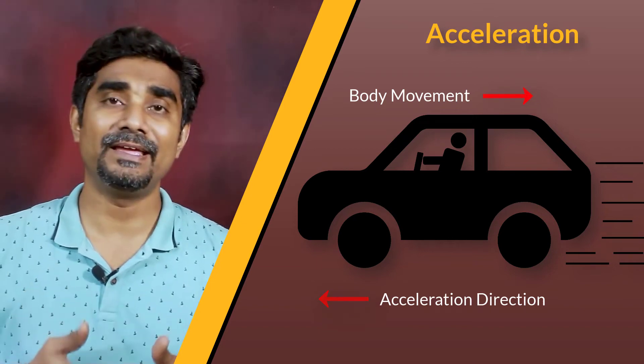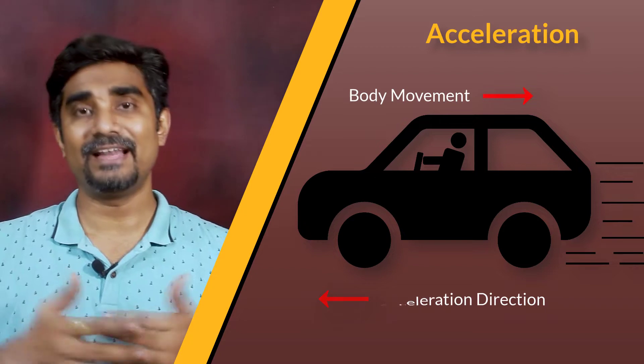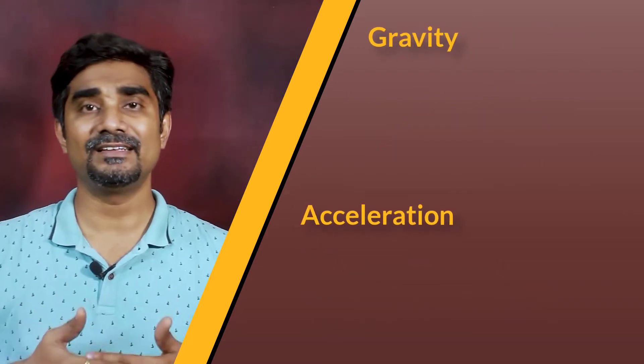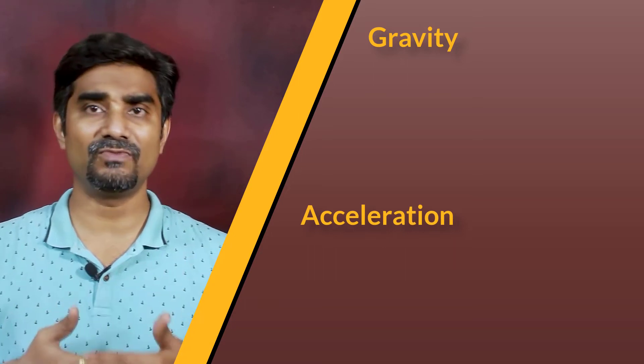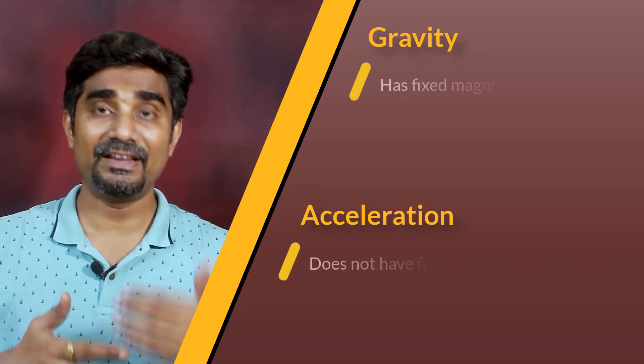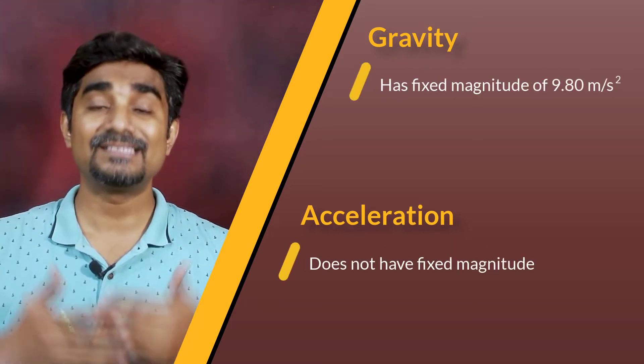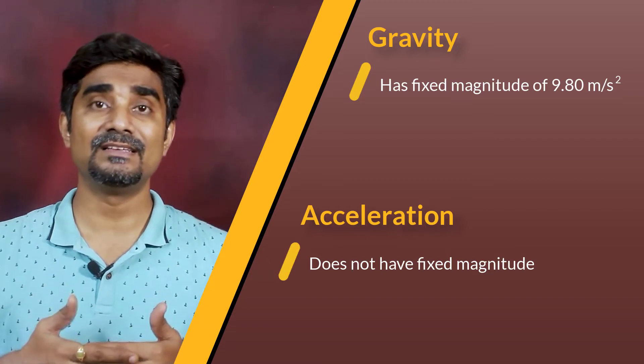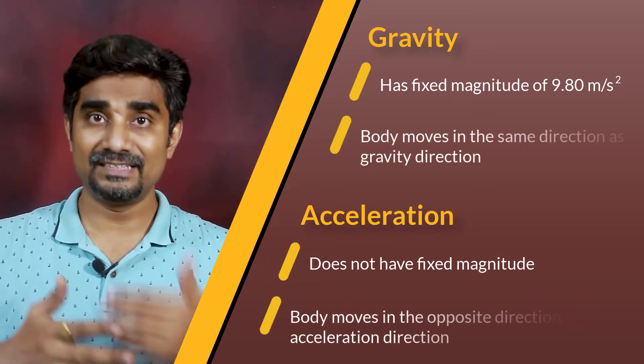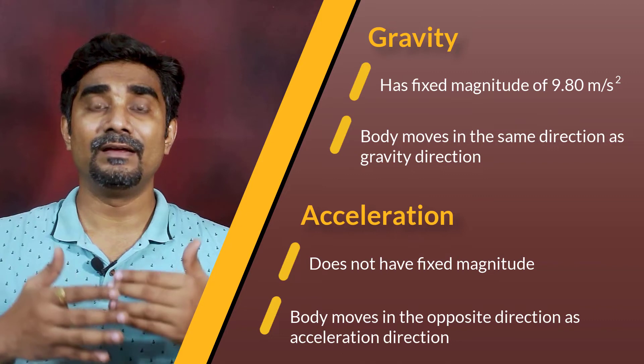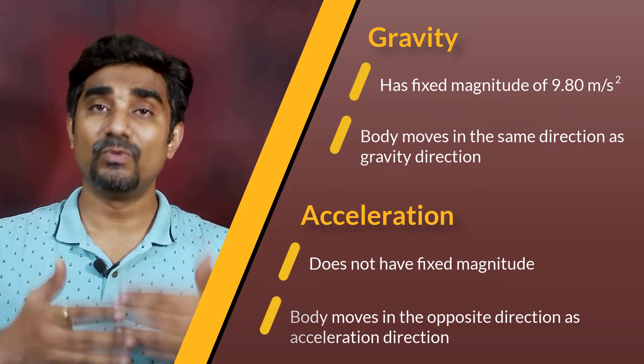So, we need to pay special attention to the direction. Thus, gravity and acceleration are essentially the same types of load except gravity has a fixed magnitude and the sign convention differs since gravity is in a stationary reference frame and acceleration is in a moving frame of reference.